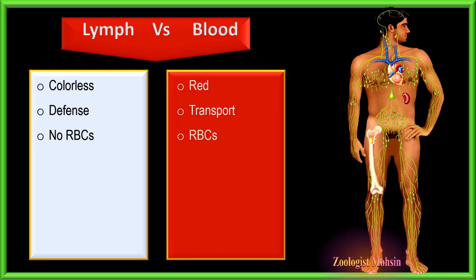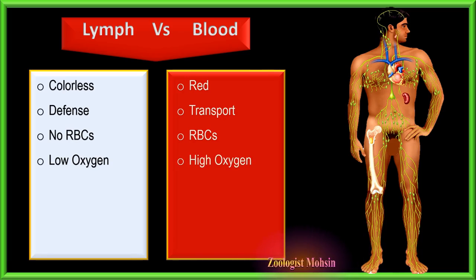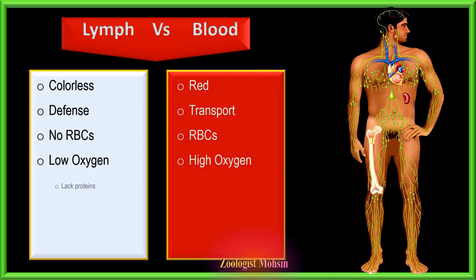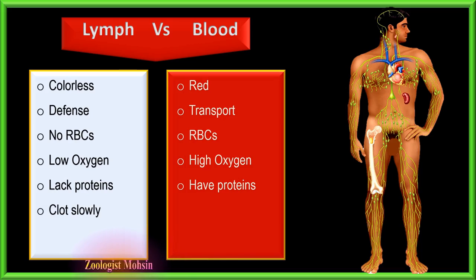Lymph does not have red blood cells while blood does. Similarly, lymph is low in oxygen while blood carries very high oxygen in oxygenated form. Lymph lacks proteins or has very low amounts, while blood has many kinds of proteins in plasma as well as absorbed proteins.